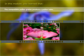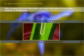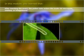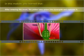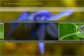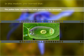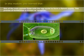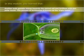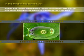The compatible pollen grains produce a pollen tube. After reaching the ovary, the pollen tube enters the ovule via the micropyle, chalaza, or integuments. After entering the ovule, the pollen tube enters the synergids and ruptures them, releasing two male gametes. One male gamete fuses with the egg nucleus to form a diploid zygote — this process is known as syngamy. Another male gamete moves towards the central cell and fertilizes with two polar nuclei — this process is known as triple fusion.